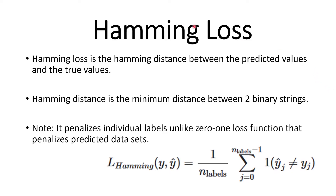Hamming loss. Hamming loss is the Hamming distance between predicted values and the true values, where Hamming distance is the minimum distance between two binary strings. It penalizes individual labels, unlike the zero-one loss function which penalizes entire predicted datasets. This is the formula for calculating the Hamming loss.